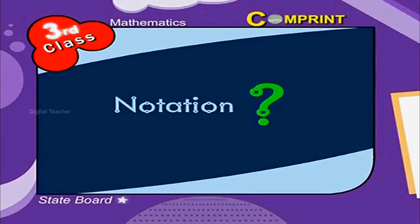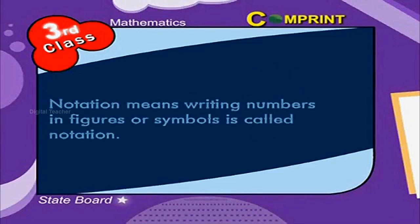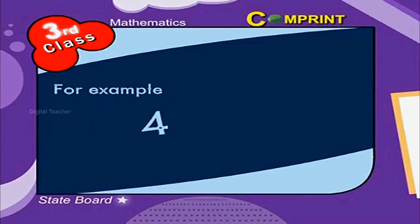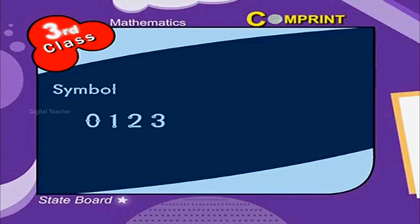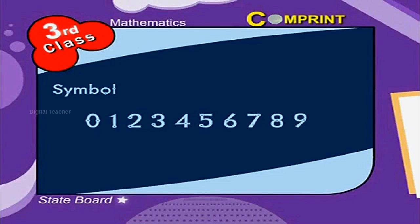What is notation? Writing numbers in figures or symbols is called notation. For example, 4,236,9. The symbols 0, 1, 2, 3, 4, 5, 6, 7, 8, and 9 are called digits.